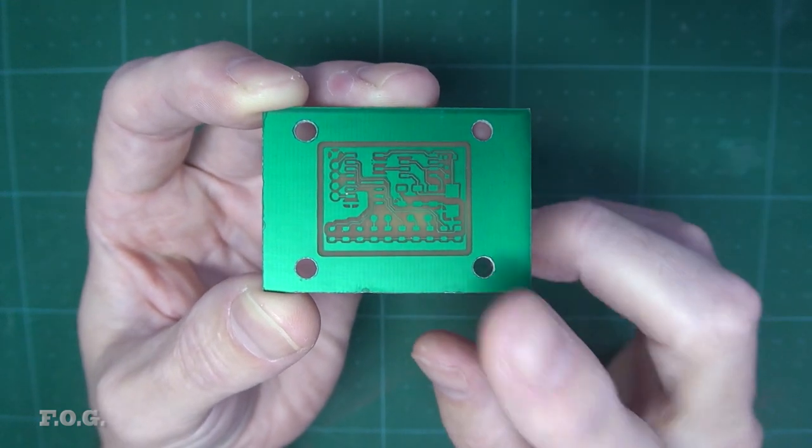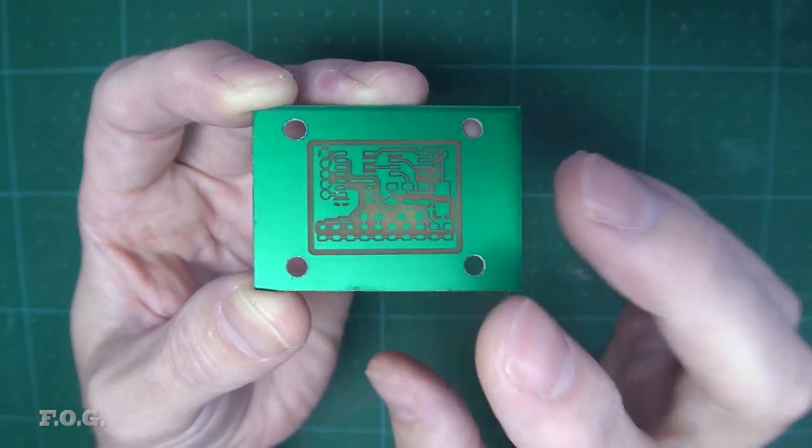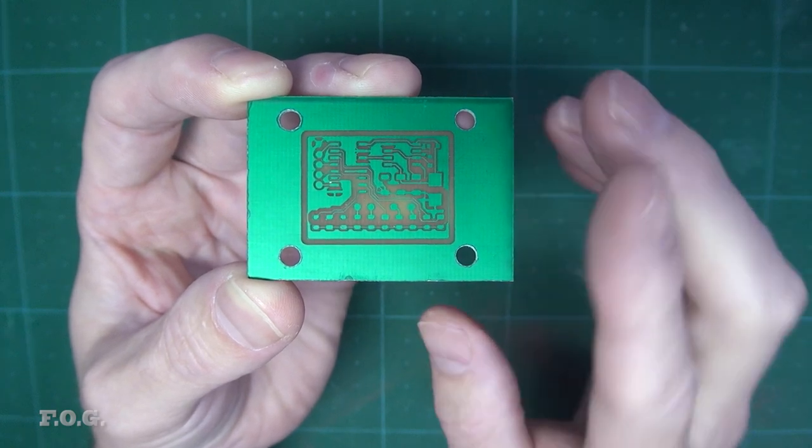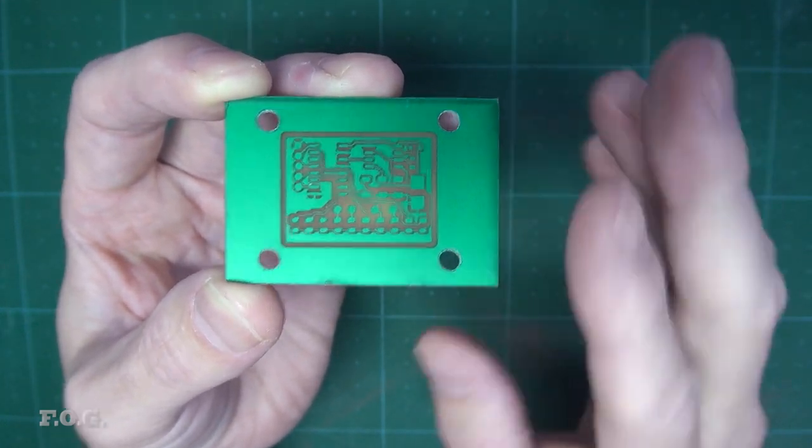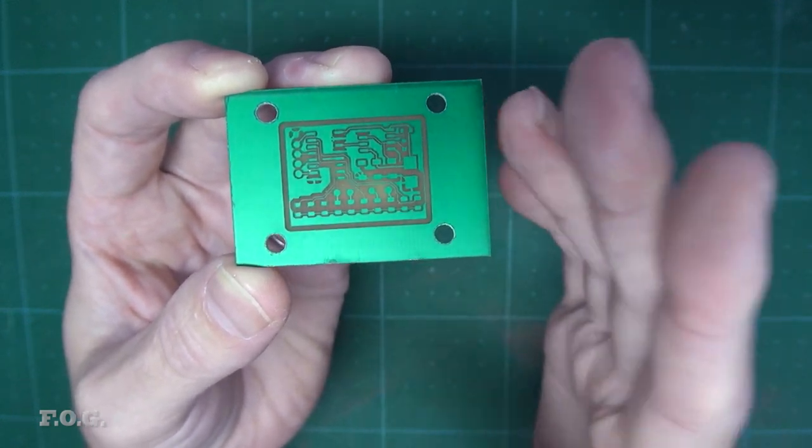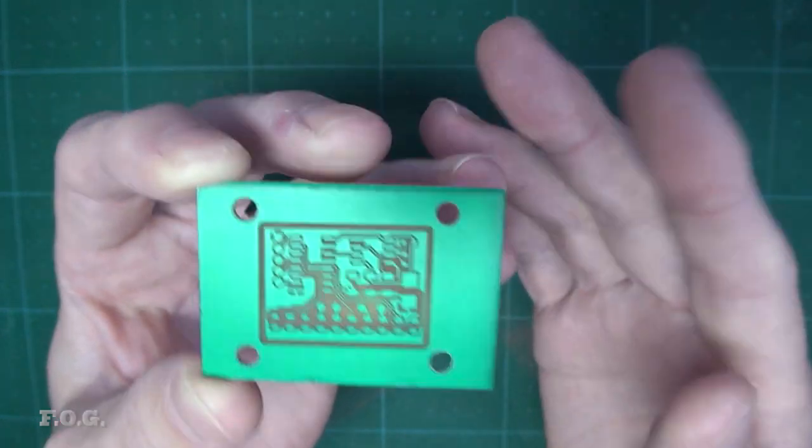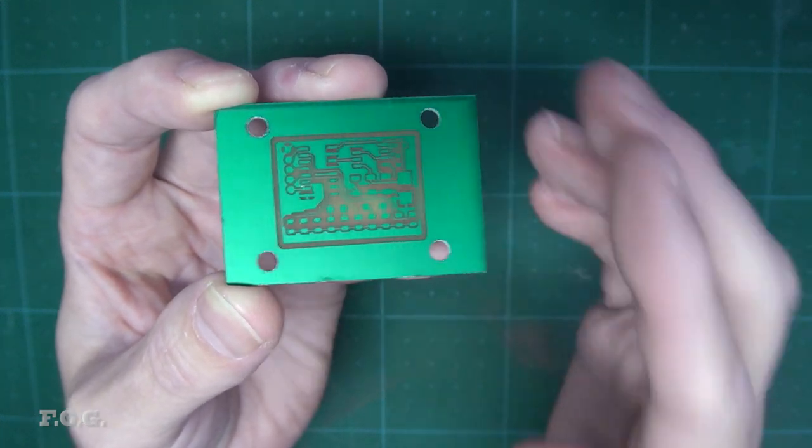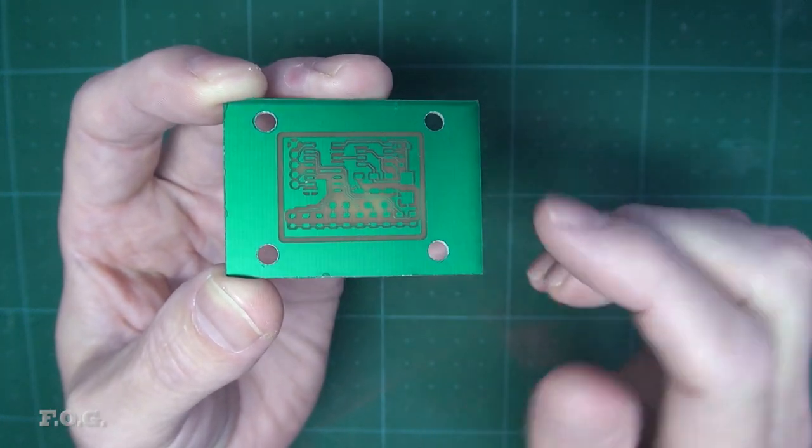So after checking with the microscope I noticed that all of the features on this board are about 0.05 millimeters undersized compared to the original design. So for now I will brute force this problem and simply increase the size of the features in the design itself and that should make up for the loss. Basically I'm hoping that this will make the features a little bit more robust and stop the tracks from being blown off by the laser. So let's give that a go.